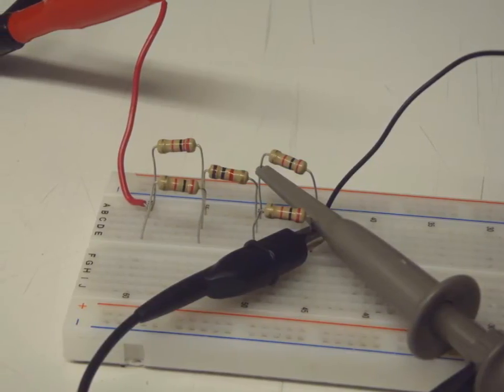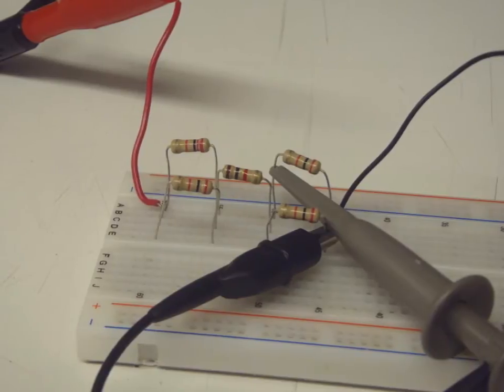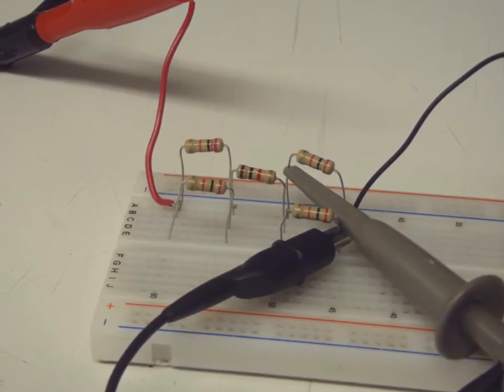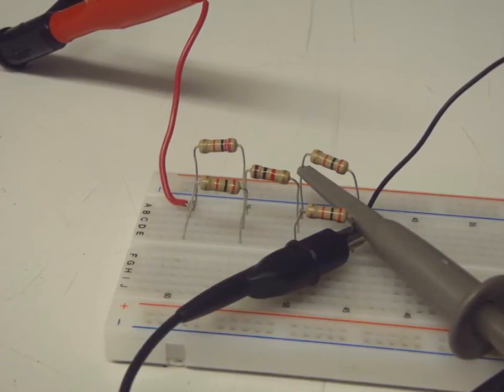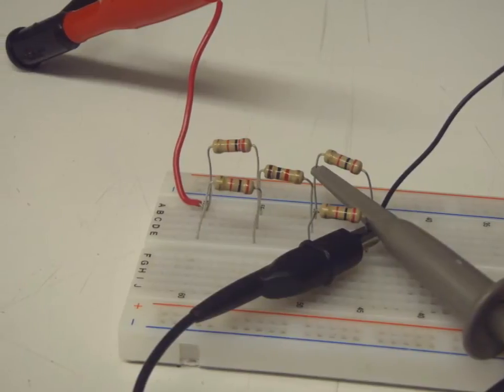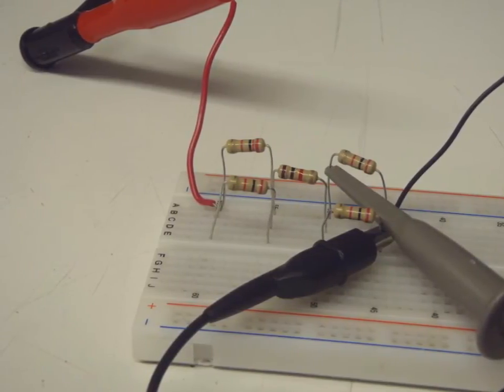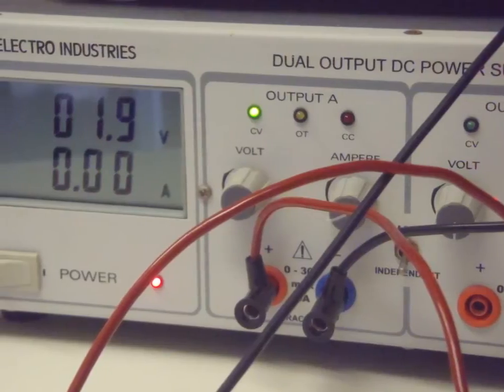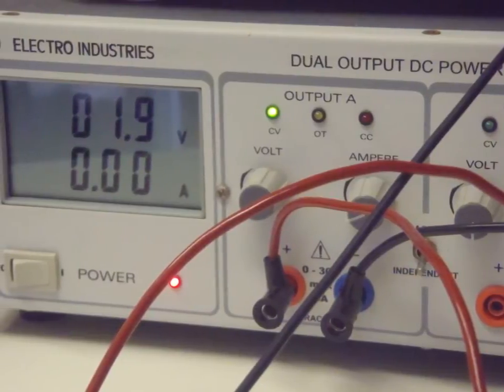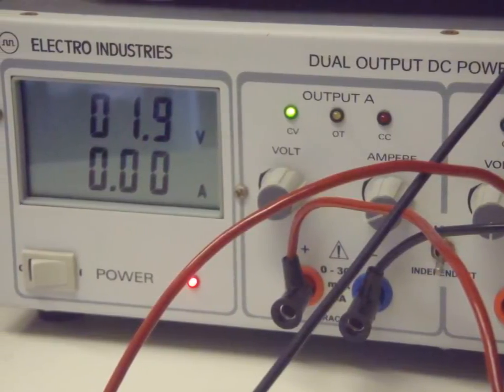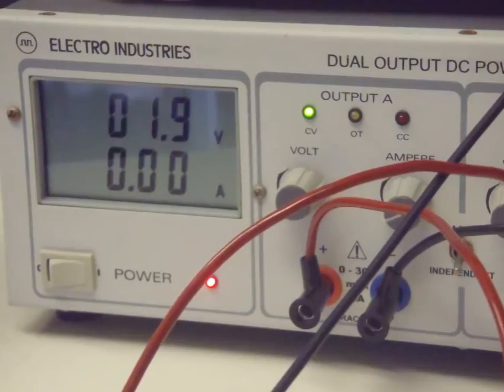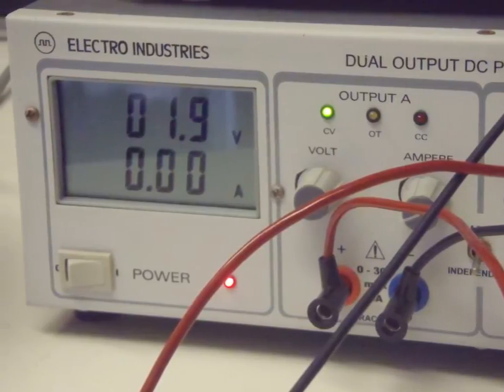Now this is the actual circuit that we based our Thevenin's circuit on. So as you can see here, it's five resistors. And the one on the far top right is actually RL. Now once again, I set up the actual voltage of this using the oscilloscope. So even though it says 1.9 volts, it's actually 2 volts exactly.